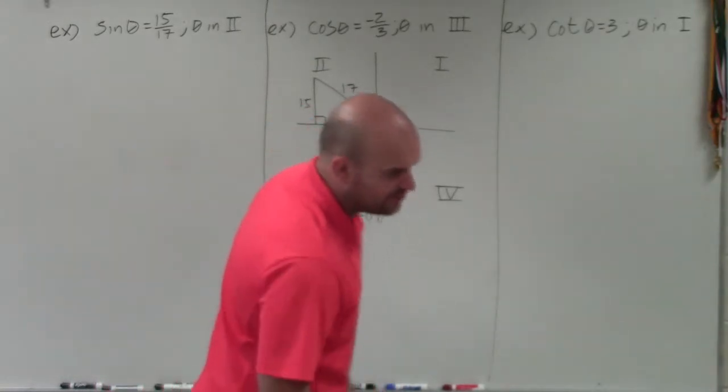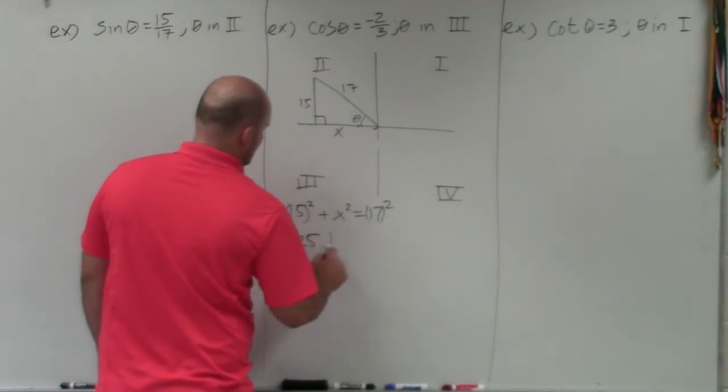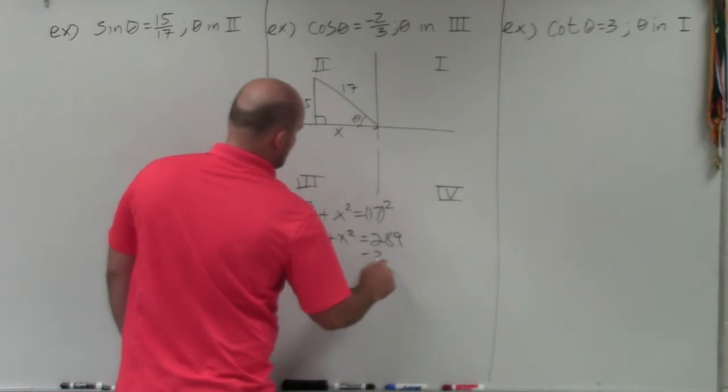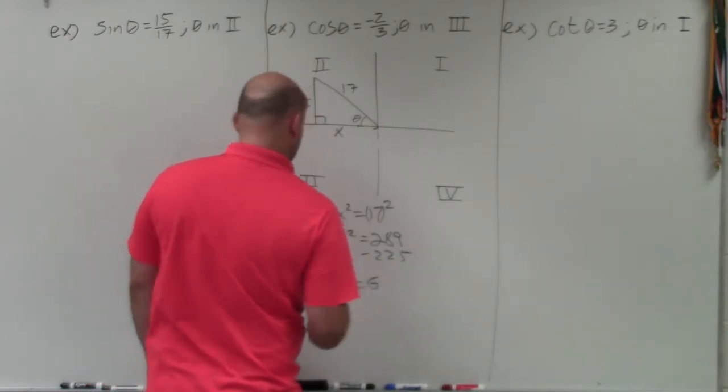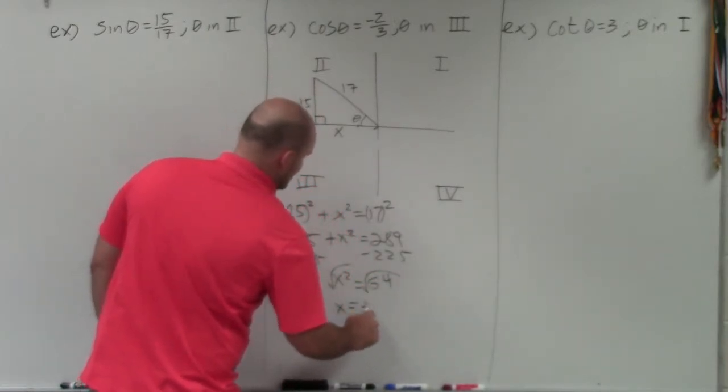And that becomes, what, 289. So this is 225 plus x squared equals 289. Subtract 225. x squared equals 64, square root, square root. x equals plus or minus 8.